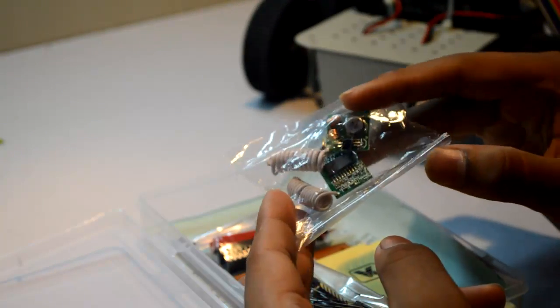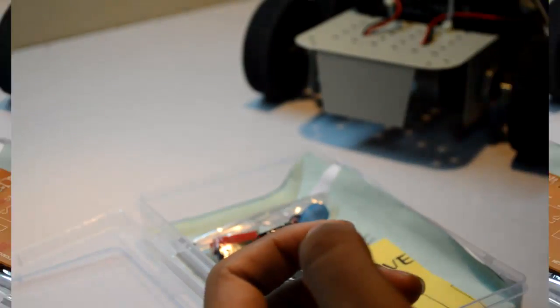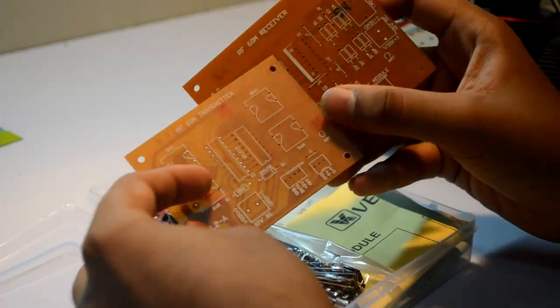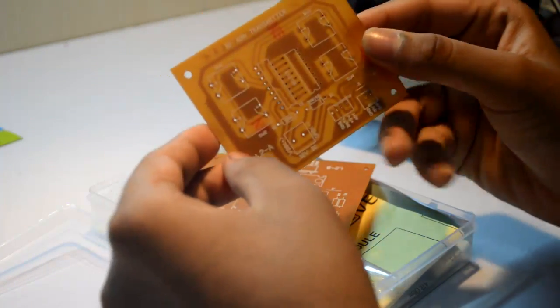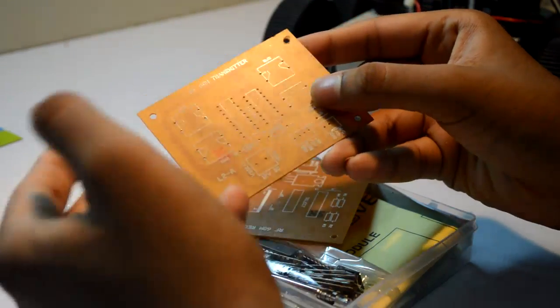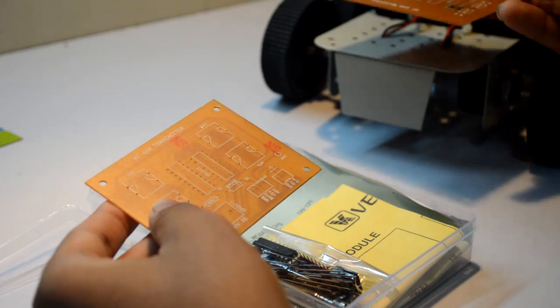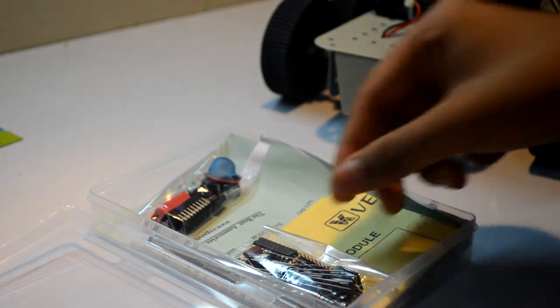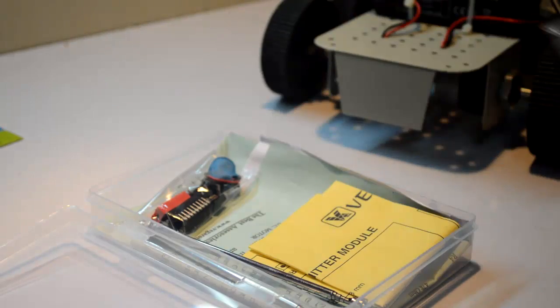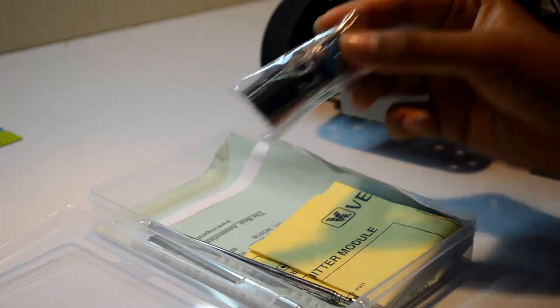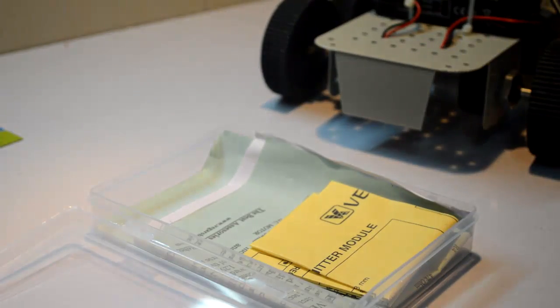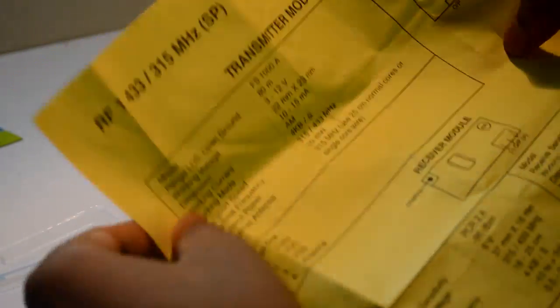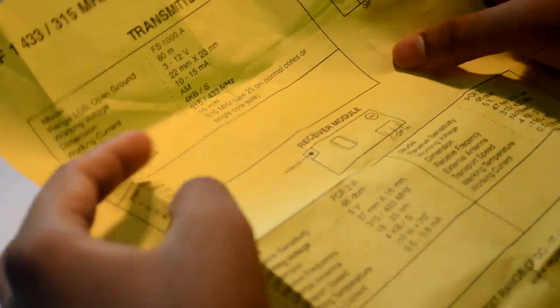This is basically the RF module transmitter and receiver, two of them. We are having the PCBs of the transmitter and the receiver. The receiver will go on the bot and the transmitter is in your hand, so it basically transmits the data from the switches through the RF to the receiver on your bot. Here are the components for the receiver, all the components for your transmitter. They have also provided some info about the transmitter and receiver module.